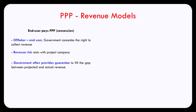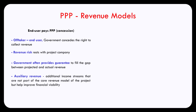On top of collecting revenue from end-users, typically the project company is also given the right to collect some supplemental revenue. For example, in a toll road project, the company may also operate a gas station or multiple gas stations along the toll road. Or in the case of a school, the project company may operate a cafeteria. These types of activities add an additional income stream to the core revenue of the project.